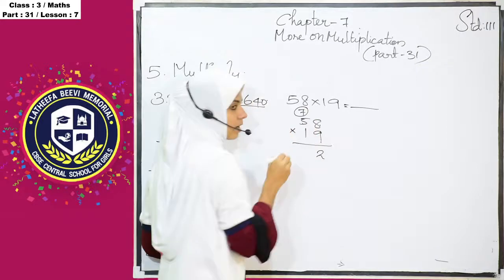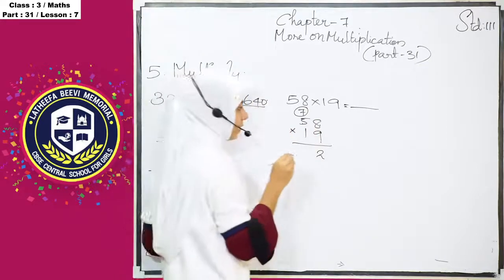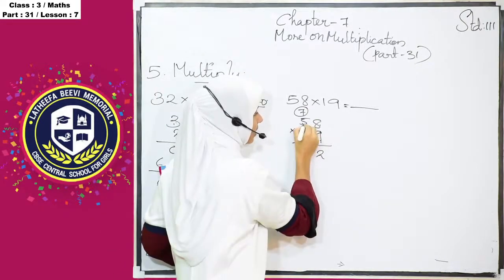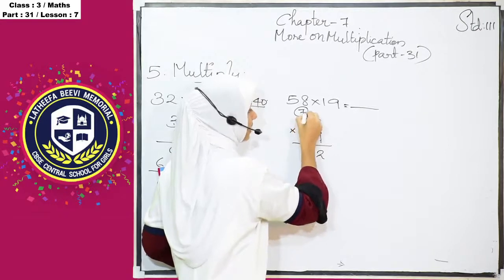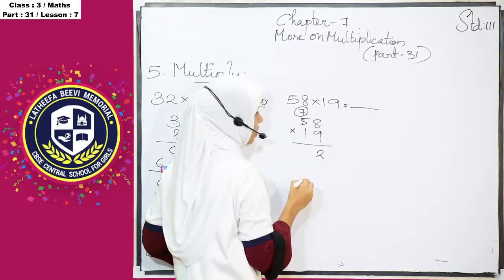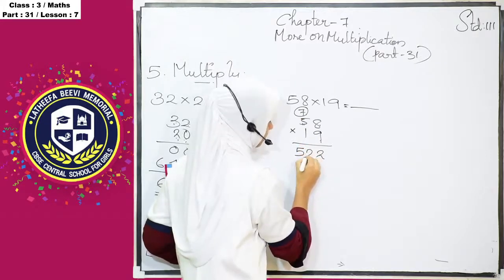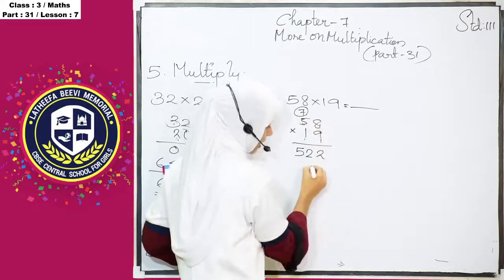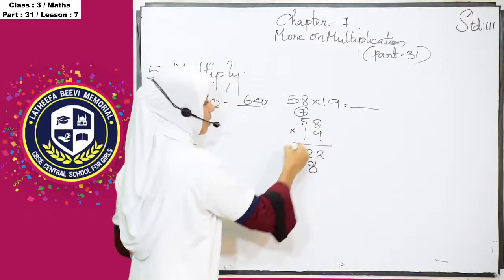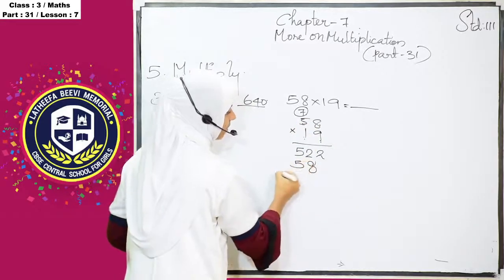We know that 9, 8's are 72. We have to write 2 here. 7 is carry over. And 9, 5's are 45. 9, 5's are 45. And 45 plus 7, we will get what? 45 plus 7, 52. Then 1, 8's are 8 that we have to write here. 1, 5's are 5.